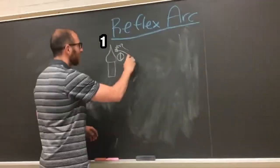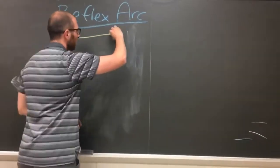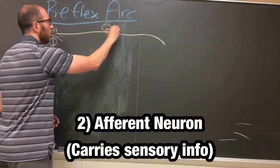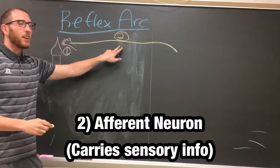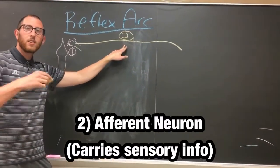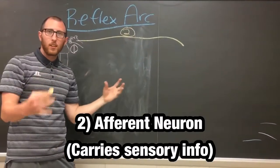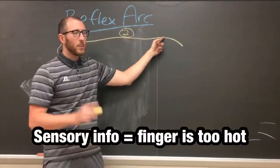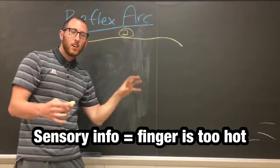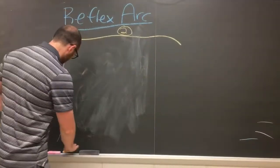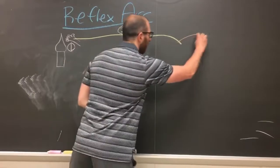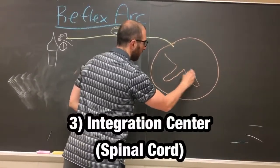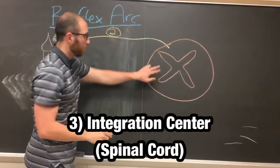Number two: traveling along the afferent sensory neuron. This is a neuron — part of the nervous system — that carries the sensory information that you just touched something hot, over to the spinal cord.